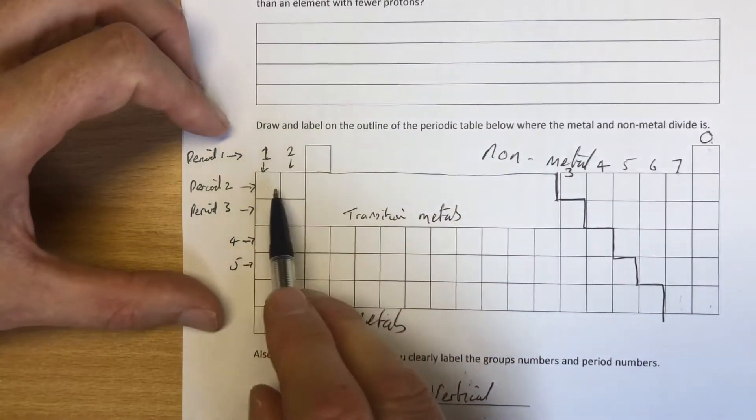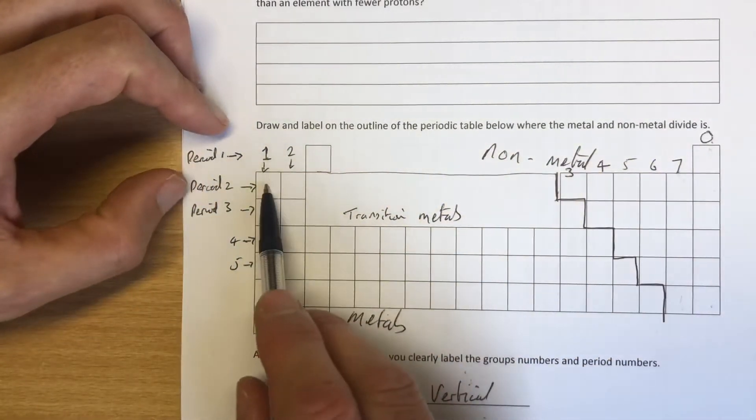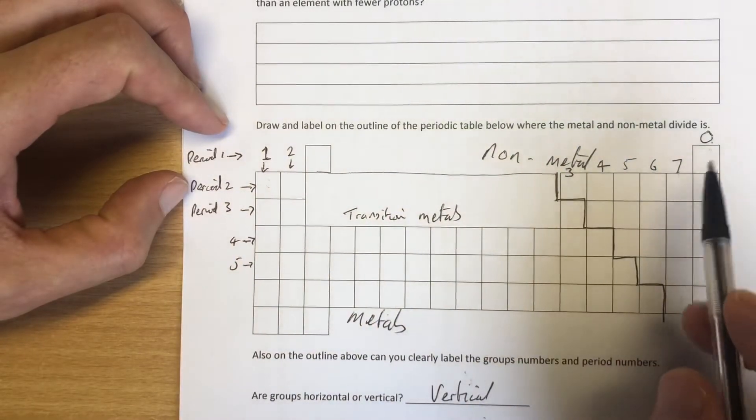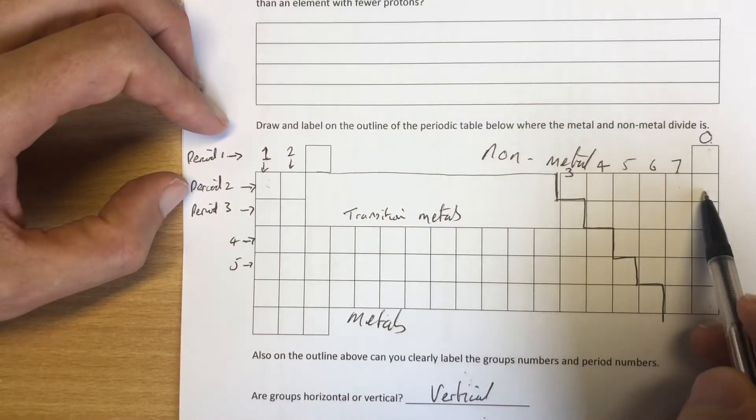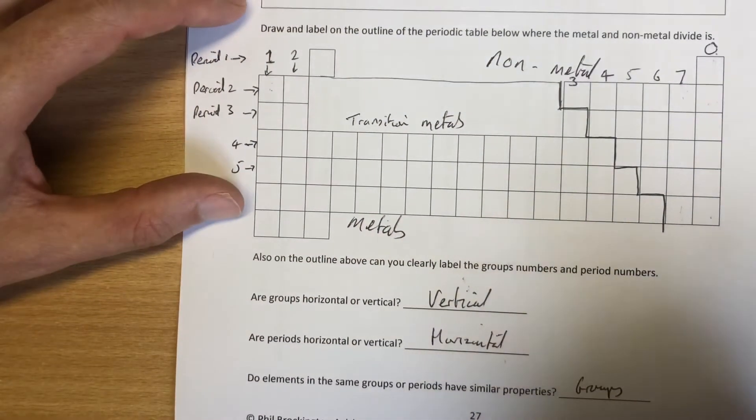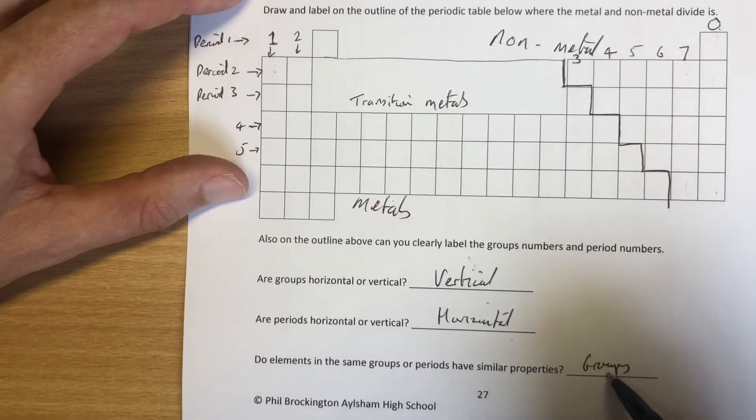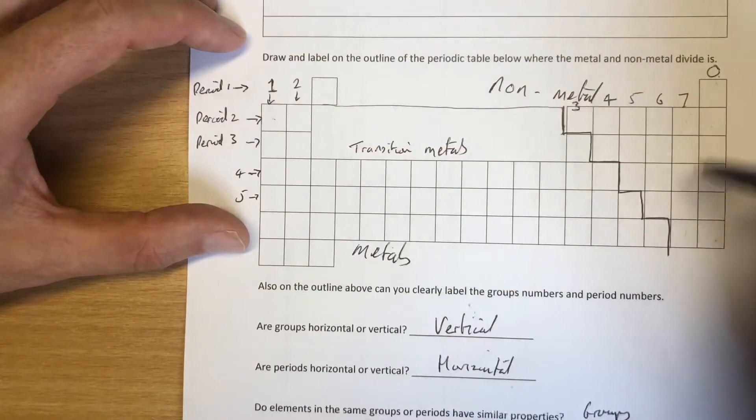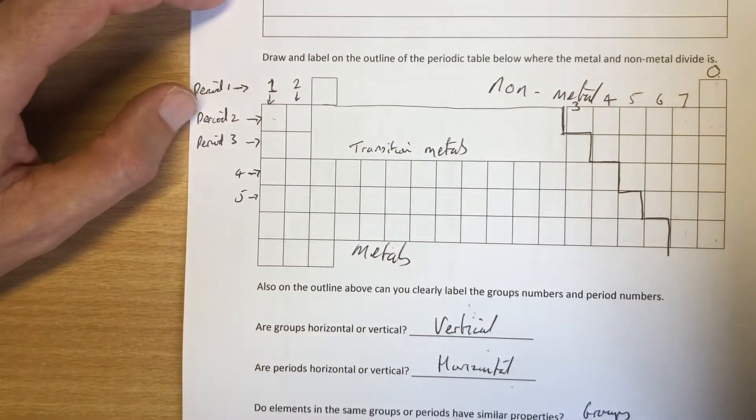Elements in the same periods have nothing in common at all. For example, reactive metal, reactive non-metal, totally unreactive. Elements in the same periods have nothing in common. Elements in the same groups have lots of similar properties, and Dmitry Mendeleev spotted that a couple of hundred years ago.